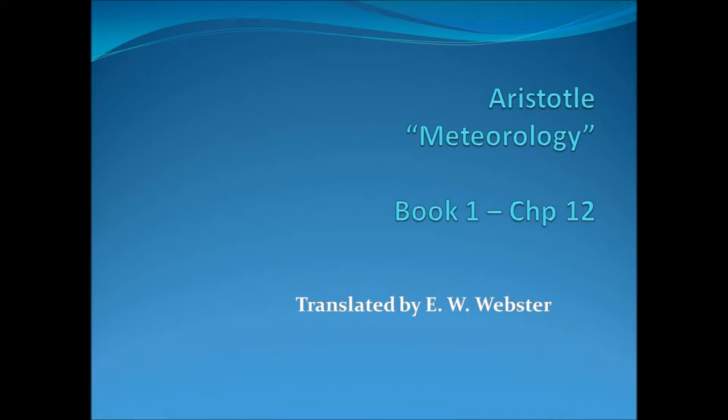Some think that the cause and origin of hail is this. The cloud is thrust up into the upper atmosphere, which is colder because the reflection of the sun's rays from the earth ceases there, and upon its arrival there the water freezes. They think that this explains why hailstorms are commoner in summer and in warm countries. The heat is greater, and it thrusts the clouds further up from the earth.